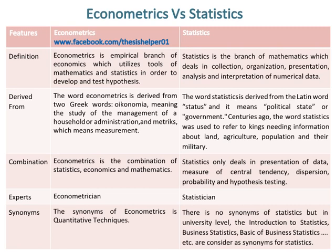Econometrics is the combination of statistics, economics, and mathematics, while statistics only deals in presentation of data, measures of central tendency, dispersion, probability, and hypothesis testing. Experts in econometrics are called econometricians, while experts in statistics are called statisticians. The synonym of econometrics is quantitative techniques.